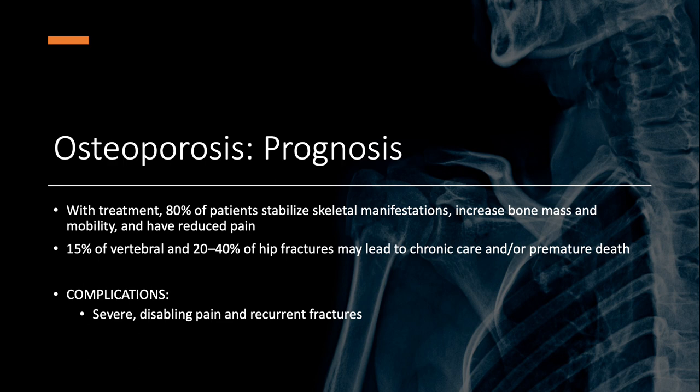As far as prognosis with treatment, it is good — 80% are well stabilized, with increased bone mass mobility, reduced pain, and decreased fracture risk. Unfortunately, without treatment, up to 40% of people with hip fractures do not do well. It leads to chronic care and premature death — a really bad prognostic sign in an elderly person with a hip fracture.